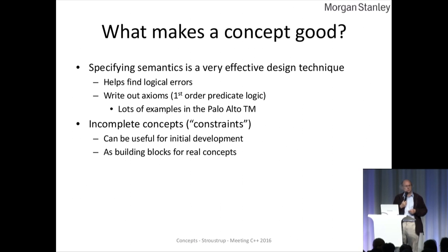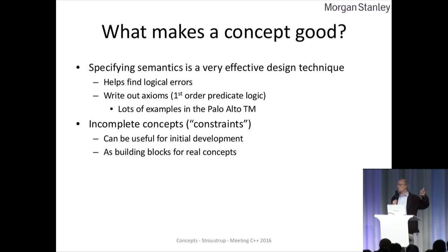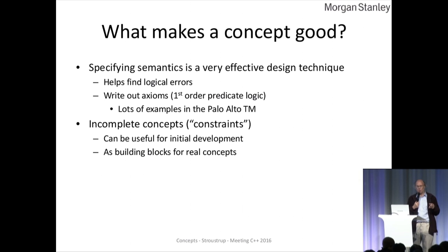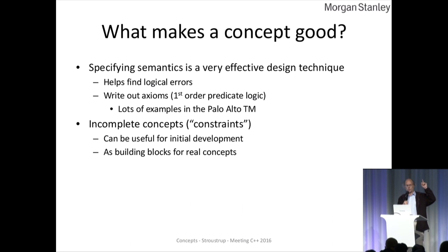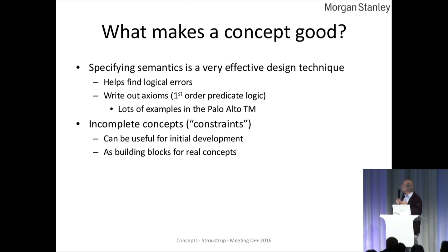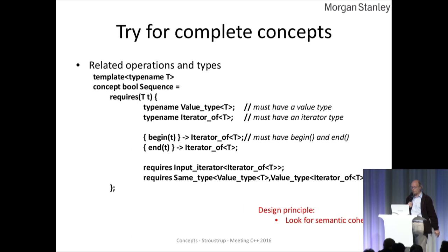You start writing a concept, some constraints on an algorithm, and you find that the first version doesn't work too well, and the second version doesn't work too well — it's like any other code. But saying, okay, let's try and think about the semantics, let's try and write the semantics down. You can look in the Palo Alto report — the report from the meeting in Palo Alto that Alex Lefanoff had us design — the whole thing has the semantics of everything defined. Incomplete concept constraints can be used for initial development, but you shouldn't really be happy until you reach something with semantics that you can let your users use. So you try for complete concepts.